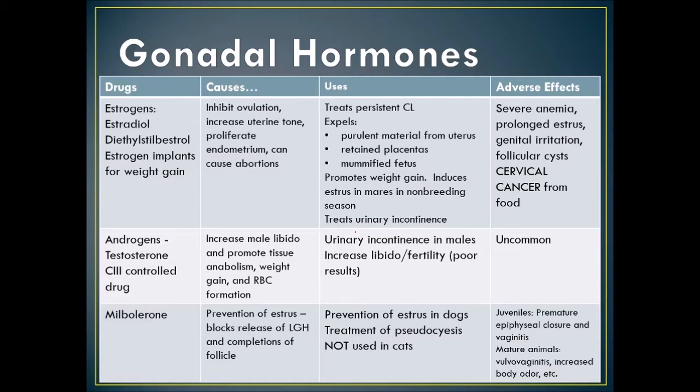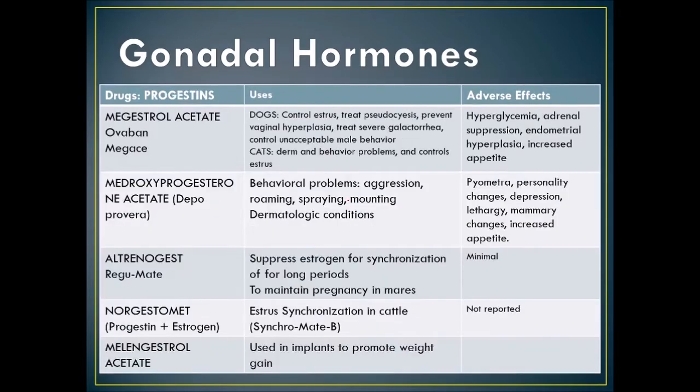Progestins: megestrol acetate — Ovaban or Megace — can control estrus in dogs, treat false pregnancies, prevent vaginal hyperplasia, treat severe galactorrhea, and control unacceptable male behavior. In cats it can help with dermatologic issues, behavior problems, and estrus control.